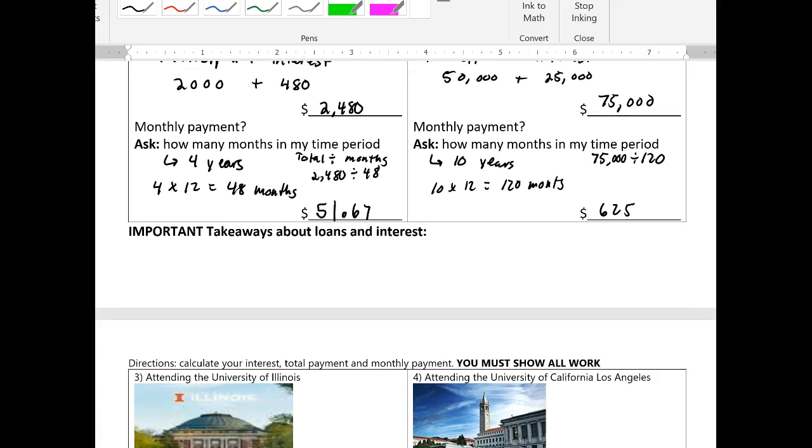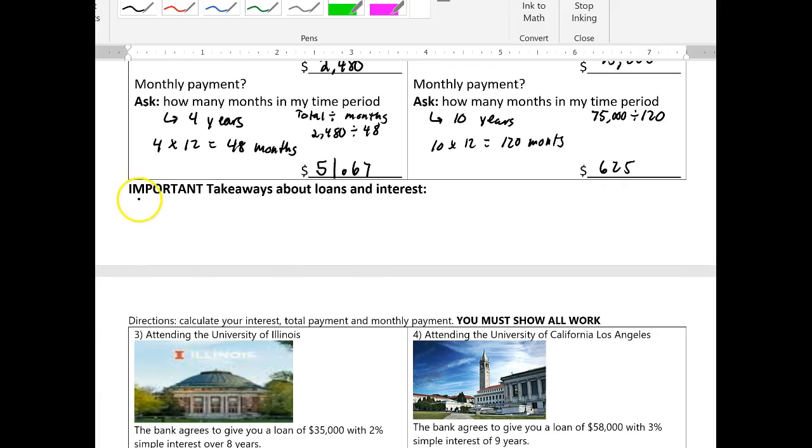So some key takeaways about loans and interest. Write these down, please. The less time, the better. The sooner you can pay off a loan, the better, right? Because if you wait for a loan to accumulate over time, you're going to have to pay up more and more interest. The lower the rate, the better. Right? The lower that borrowing interest rate is, the less you're going to have to pay back the bank in addition to your principal.